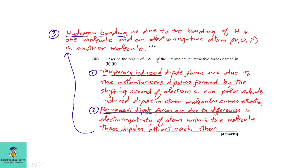Part b3: describe the origin of two intermolecular attractive forces. First, temporary induced dipole forces are due to instantaneous dipoles formed by the shifting of electrons in non-polar molecules. Non-polar molecules have even electron distribution, but when they come together, a temporary positive and negative side is created, inducing a temporary dipole that causes attraction.